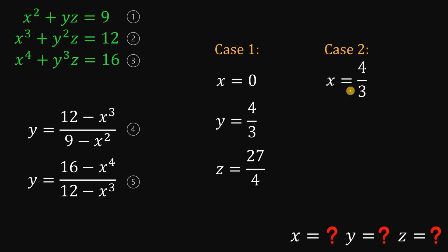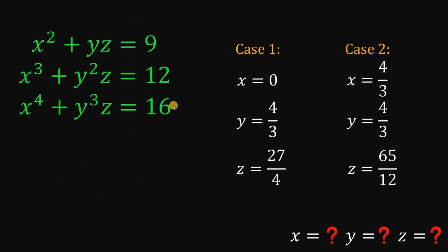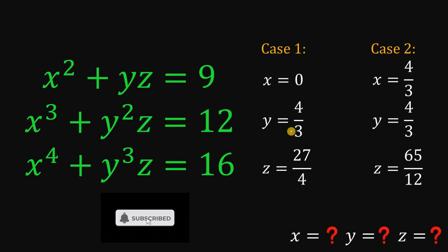On the second case, if x equals 4 over 3, using equations 4 and 5 we get that y equals 4 over 3 also. And using the first, second, or third equation to find the value of z, we get z equals 65 over 12. Therefore, given the three original equations, we end up with these two possible cases: x equals 0, y equals 4 over 3, and z equals 27 over 4; or x equals 4 over 3, y equals 4 over 3, and z equals 65 over 12.